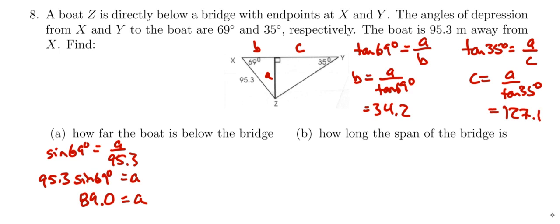And so for the span, it's going to be B plus C. And that will equal the 34.2 plus the 127.1. And all rounded together, it's going to be 161.2 meters.